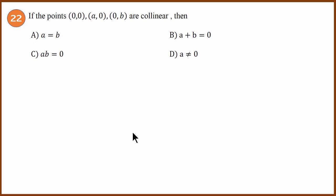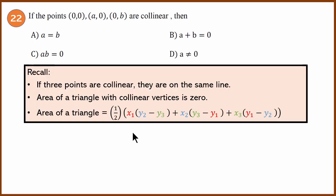Second question: three points are given and said to be collinear, and we need to find a relationship between those three points. Recall that if three points are collinear, they are on the same line. The area of a triangle with collinear vertices is 0. The area of a triangle with vertices (x1, y1), (x2, y2), and (x3, y3) is given by the standard formula.